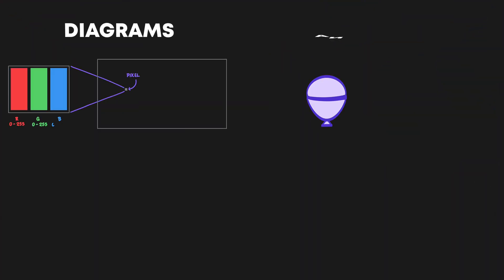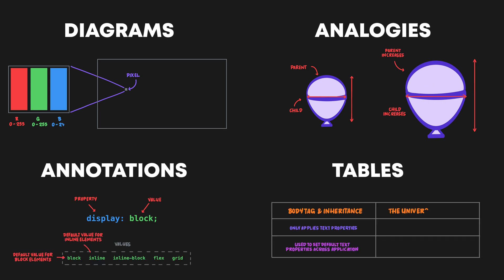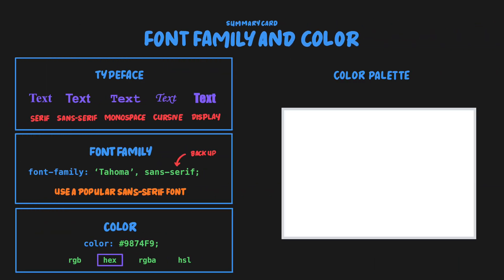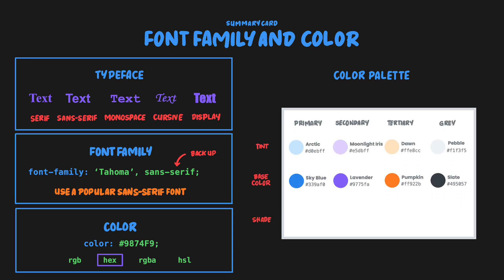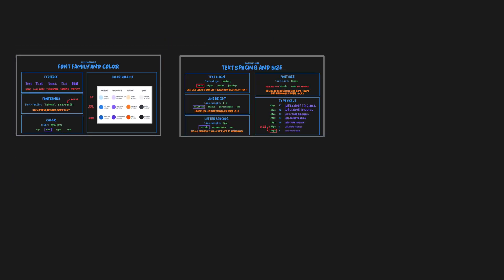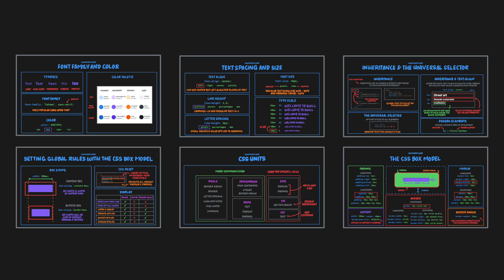I also use the most effective teaching techniques for visual learners, where the course is jam-packed with diagrams, analogies, code annotations, tables, and much more. By far the most useful feature is that every topic ends with a summary card, so that by the end of the course you have a full set of cards consolidating everything you need to know for HTML and CSS.